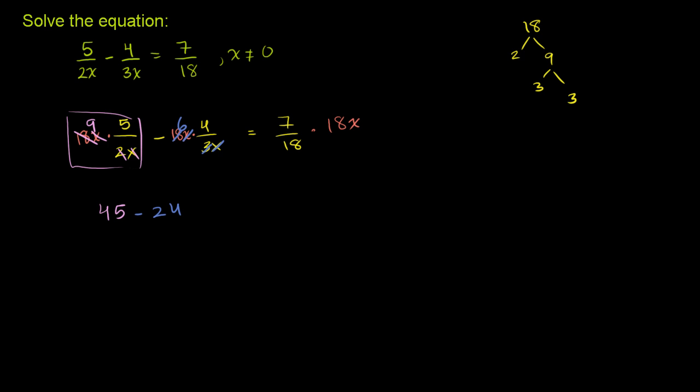let me do that in the yellow, is equal to, and then you have this term, 7 over 18 times 18x. Well, the 18's cancel out, and you're just left with 7 times x is equal to 7x. And now this becomes a much, much simpler equation.